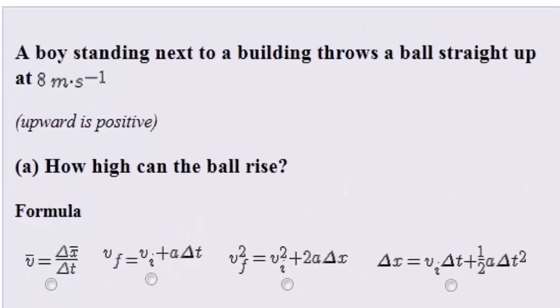A boy standing next to a building throws a ball straight up at eight meters per second. They tell us upwards is positive, and then how high can the ball rise?